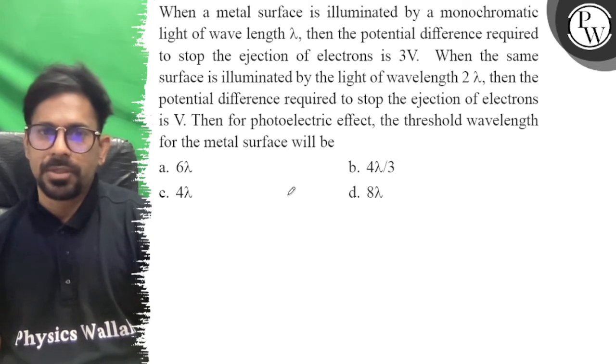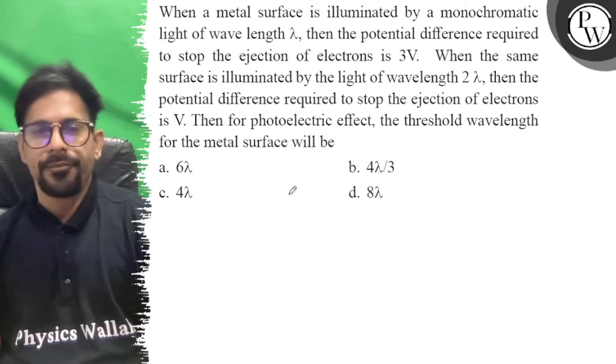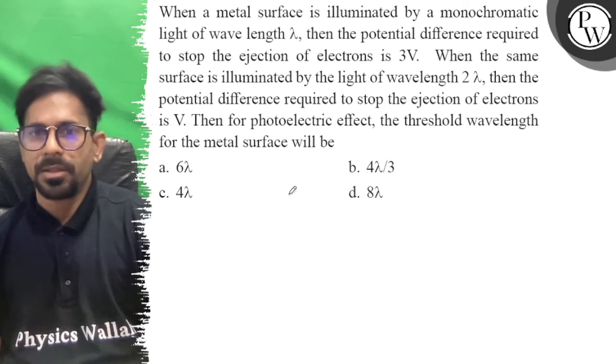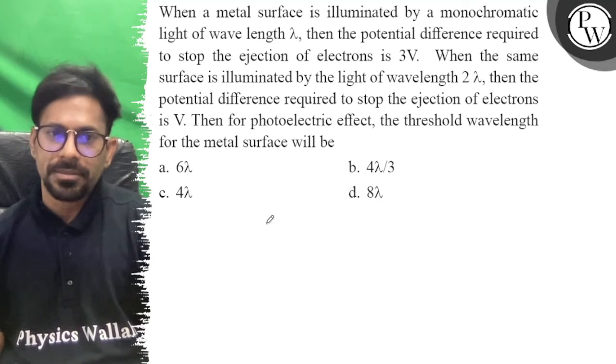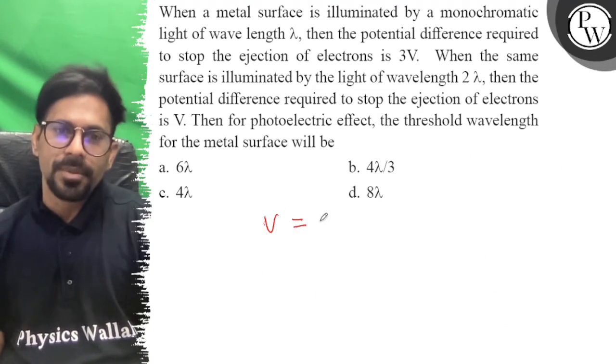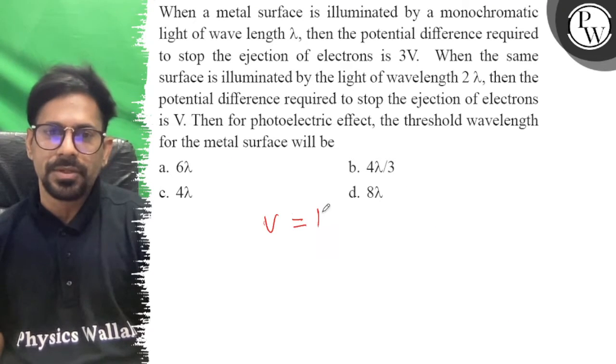When the same surface is illuminated by the light of wavelength 2 lambda, then the potential difference required to stop the ejection of electrons is V. Then for the photoelectric effect, the threshold wavelength for the metal is. The stopping potential is 1240 (1 by lambda minus 1 by lambda 0).